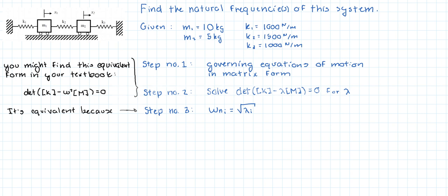The first step to doing this is to find the governing equations of motion in matrix form. We're going to use the fast method that I showed in a previous video. Step number two will be to solve the determinant of the stiffness matrix minus lambda times the mass matrix equals zero. We're going to solve for lambda, and the last step is to find the natural frequencies as the square root of the lambda values that we're going to find.